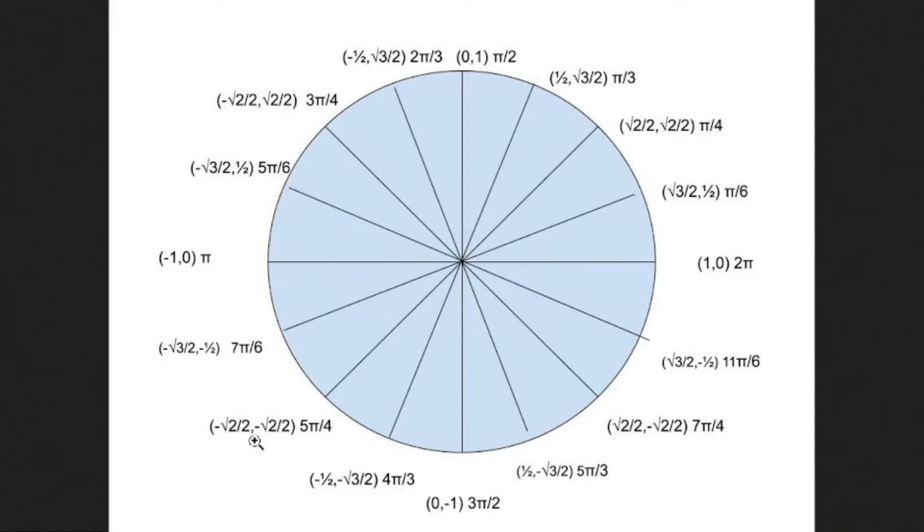And then for your third quadrant, where both x and y in the ordered pair are negative, well, it kind of goes the opposite way. You have one more than the denominator in your numerator—seven-sixths pi. And then one more for the square root of two over two radian. And then you have four over three pi, which is, again, one more than the denominator.